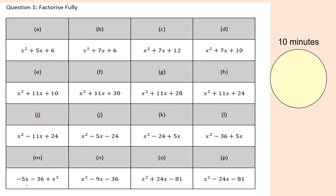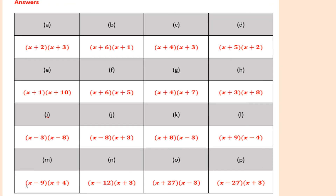Let's have a go at these questions. Give yourself about 10 to 15 minutes. Remember to list all your factors to find your product, and then to find the coefficient of the x term — like 7x or 5x — you're looking for the sum where you add or subtract them to get that number. Here are the answers to those questions. Double check and mark them. Hopefully you've got all of them right.